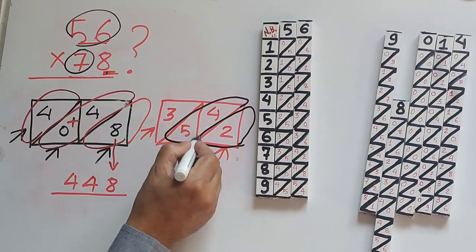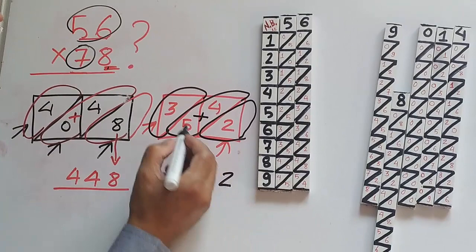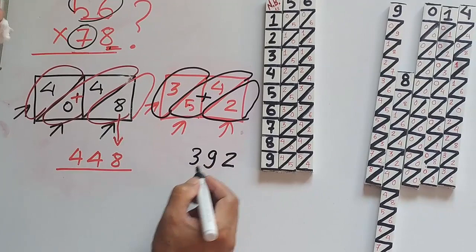So we have the answer 2, 5 plus 4 is 9, and 3: 392. So we got the answer of 7 and 8.